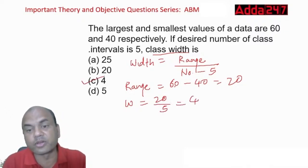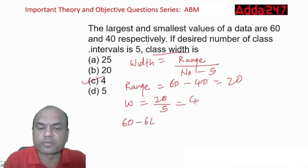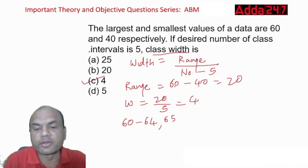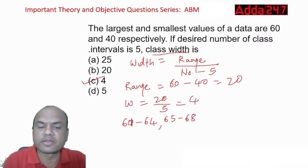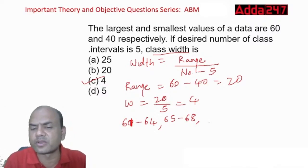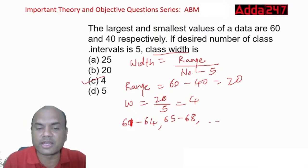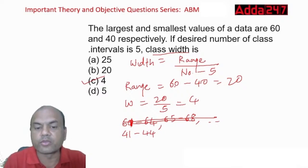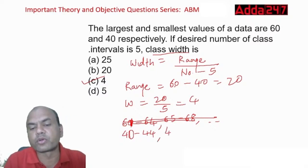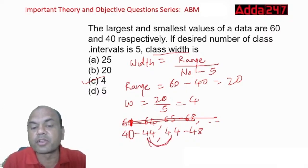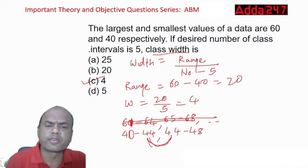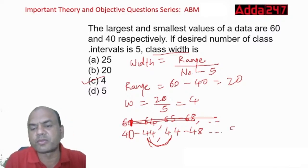What does class width of 4 mean? Your classes would be, for example, 40 to 44, then 44 to 48 — this is called exclusive grouping, where the ends match. Or 41 to 44, 45 to 48 — called inclusive grouping, where the ends don't match. You can go up to 56 to 60 as the last class.